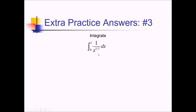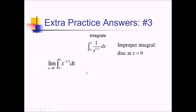For this problem, we're trying to integrate 1 over the cube root of x from 0 to 1. The issue here is that there's a discontinuity at the lower limit of integration at 0 — you're essentially doing 1 divided by 0. Because of that, we have an improper integral and we're going to have to rewrite this using limits. So I'm going to write this as the limit as a approaches 0 from the right side of the integral from a to 1 of x to the negative 1 third power.